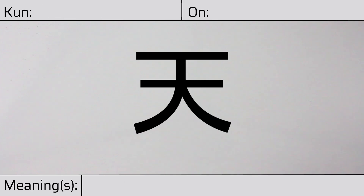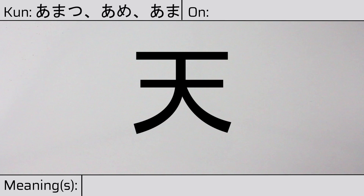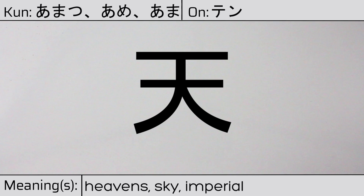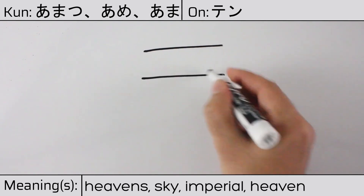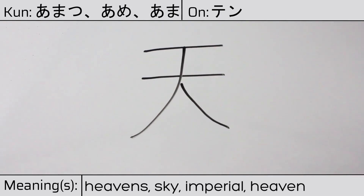Welcome to this lesson on Japanese kanji. Today, we'll be discussing this character. This kanji has kunyomi or Japanese readings of amatsu, ame, or ama, and it has onyomi or Chinese reading of ten. This character has the meanings heavens, sky, imperial, or heaven. Here is the stroke order.